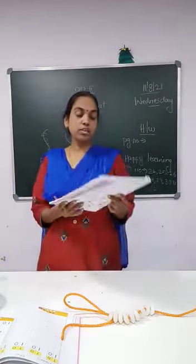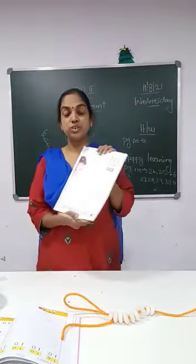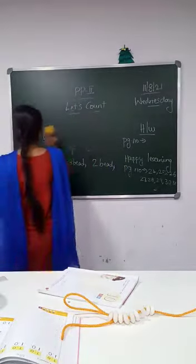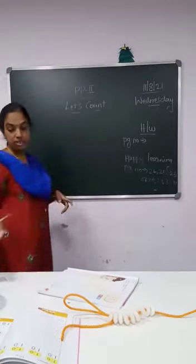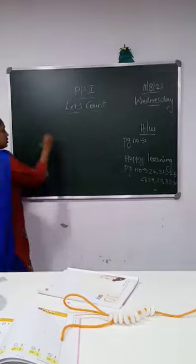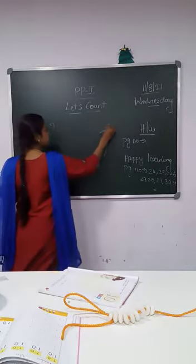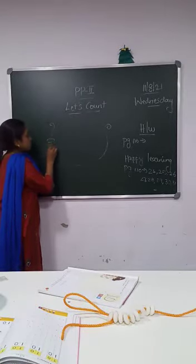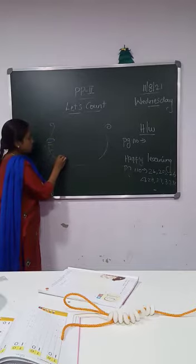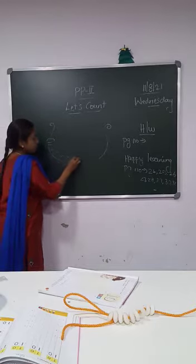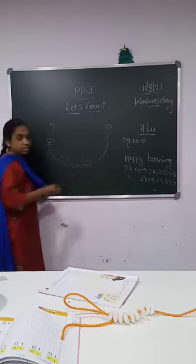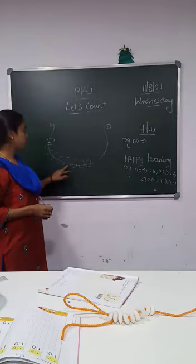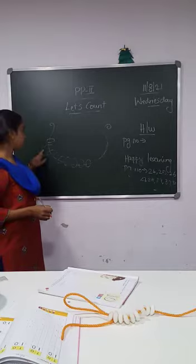Okay children, now turn to next page, page number 33. Now we are going to learn number 10. So Kyra in a string has inserted how many cookies? 9 cookies. Let us count: 1, 2, 3, 4, 5, 6, 7, 8, 9. How many cookies children? Kyra inserted 9 cookies.